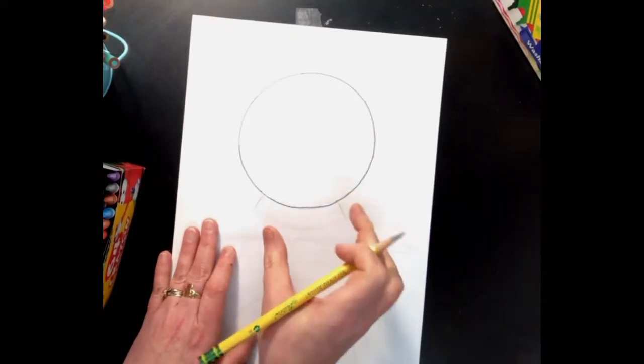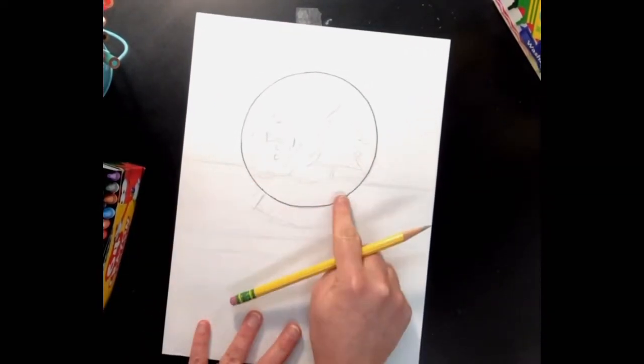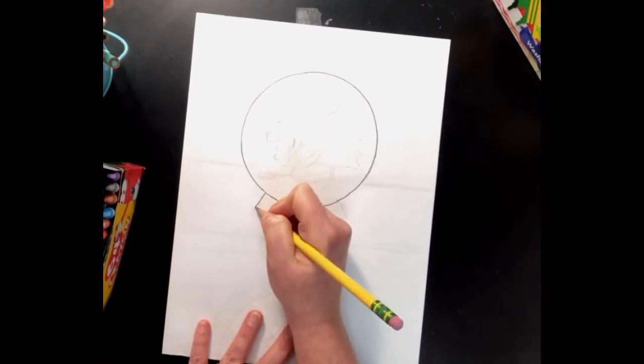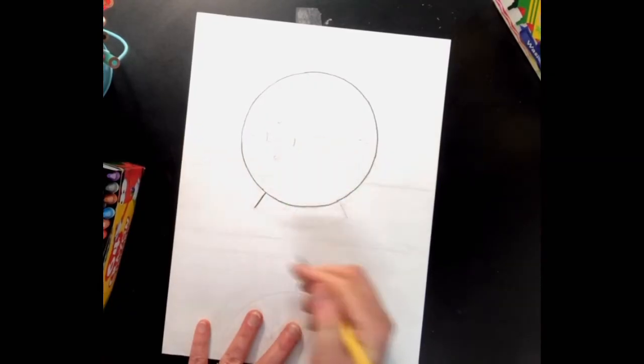And then the base of the snow globe where the snow globe sits is actually really easy to draw. You go to the bottom of the snow globe and you draw two diagonal lines that are about an inch long.